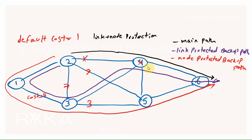The link-protected backup path has a lower metric. The metric of the red path (node protection) is 1+4+5+3 = 8 and 9, while the blue path (link protection) is 1+4+5+6 = 7. As we can see, the node-protected backup path is not the best choice, but it replaces the main path when the outgoing link fails, since node protection has higher priority compared to link protection.